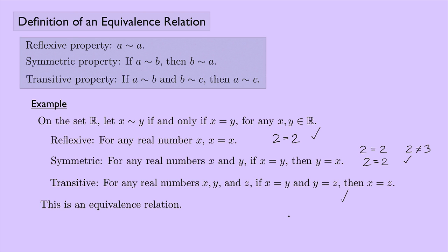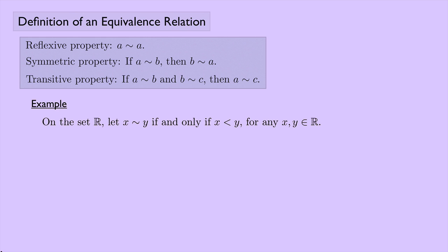Let's look at another example. On the set of real numbers, let X be equivalent to Y if and only if X is less than Y, for any real numbers X and Y. Let's check the three properties. First, reflexive: for any real number X, is X less than X? Is two less than two? No — so this property fails.